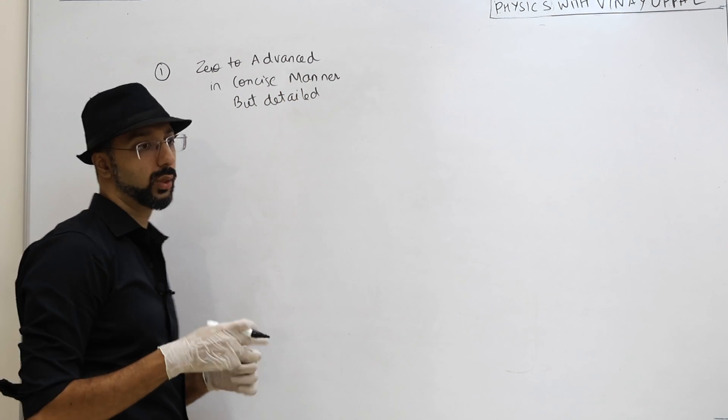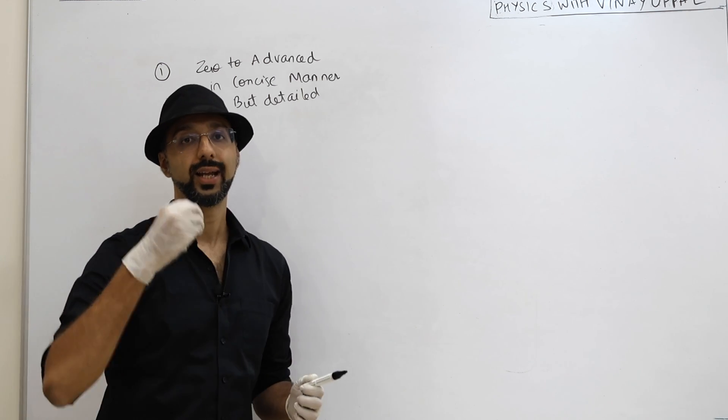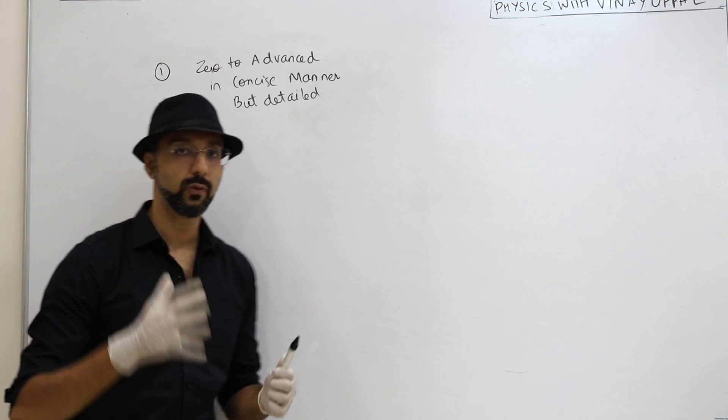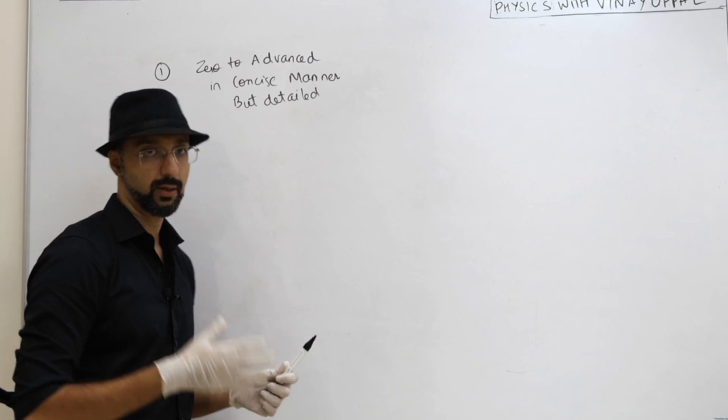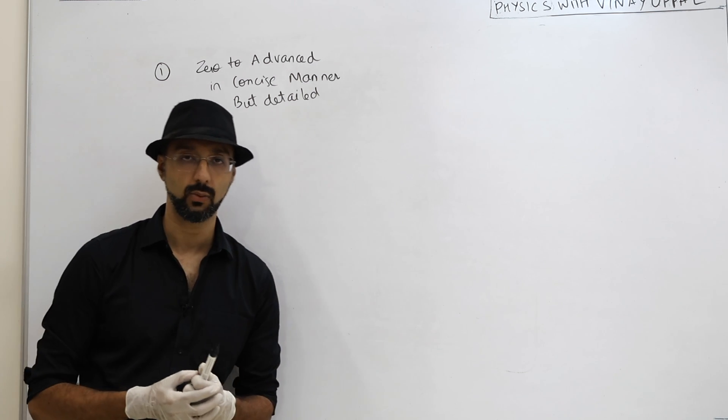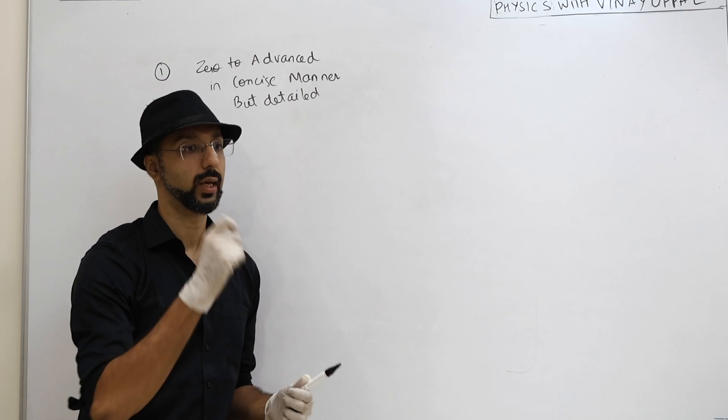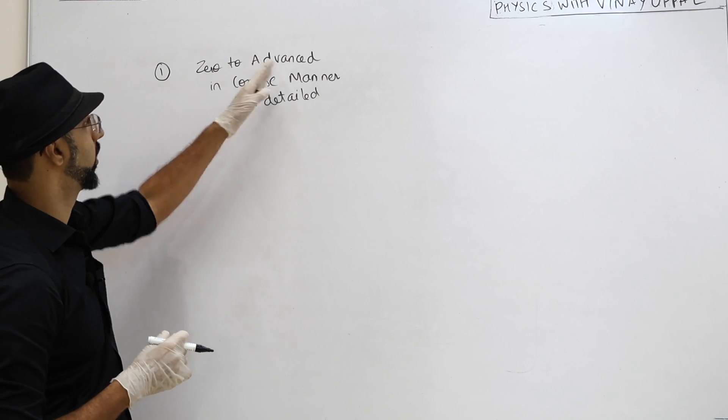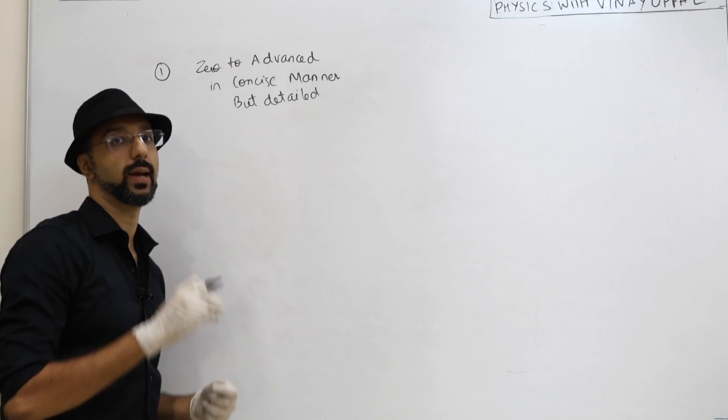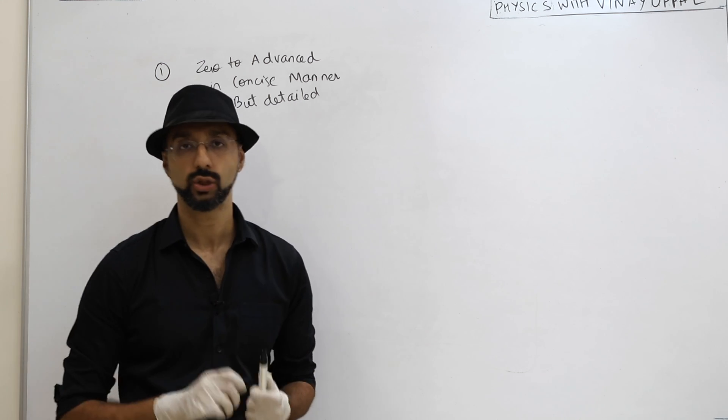Three things which my students are looking for in chemistry and maths. So if you know any chemistry and maths courses that satisfy these three requirements, I will list down now. Please let me know in the comment section because that will help my students really boost their scores. So the first thing is that zero to advanced in a concise manner but detailed manner. It is not that it will be small, but in a concise manner, in a time-efficient manner. It is not time-wasting.